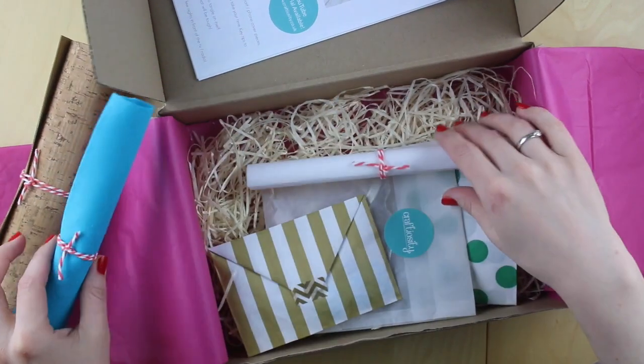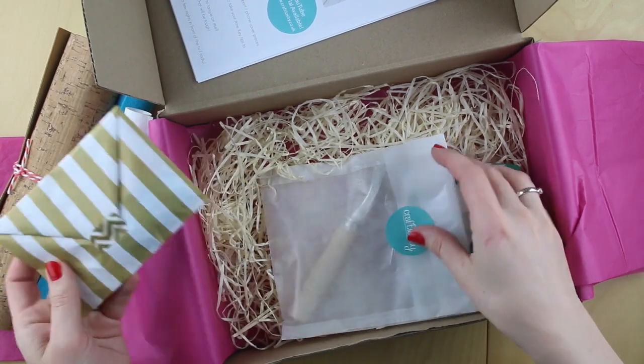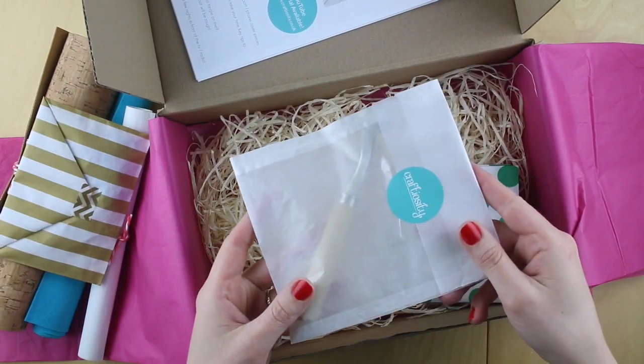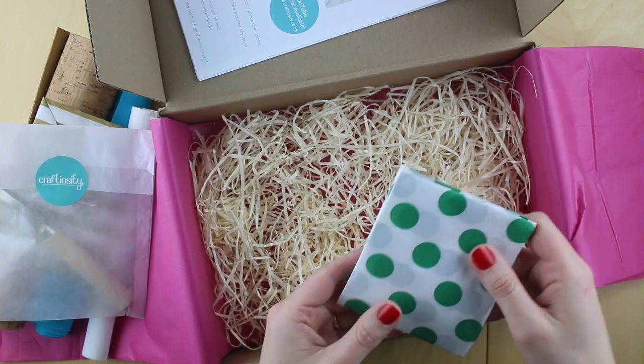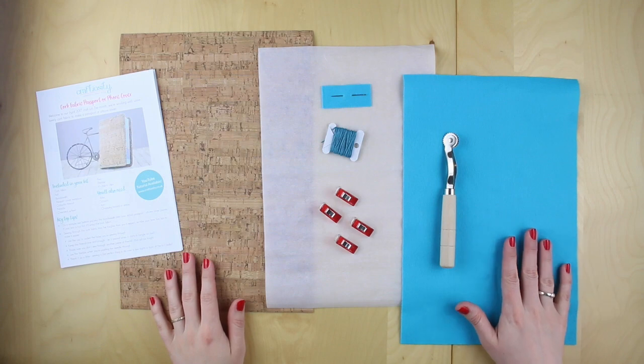The cork fabric, some felt, some Bondaweb, and this little guy is some thread and a needle and here are your tools. There's your cork fabric, your Bondaweb and your felt.